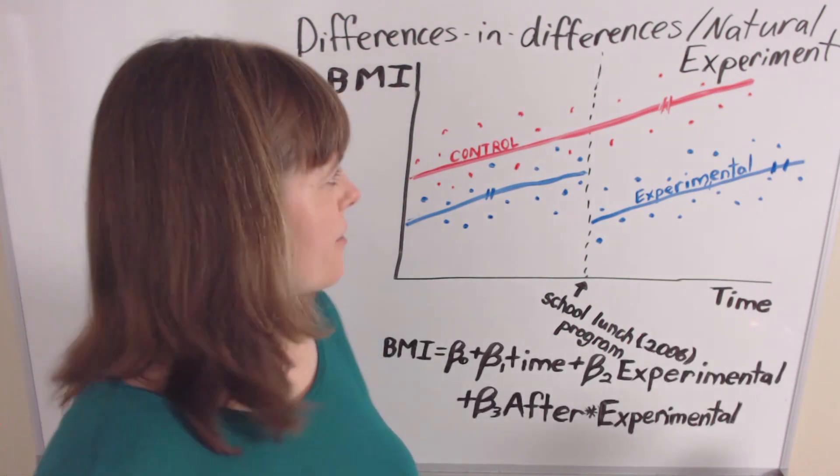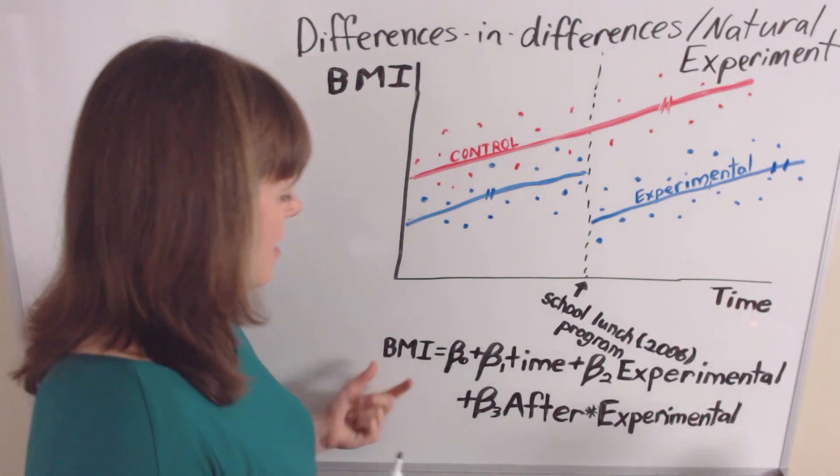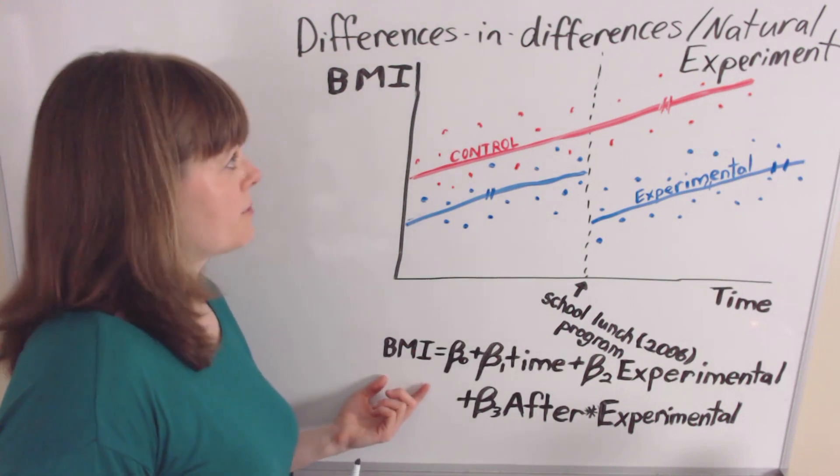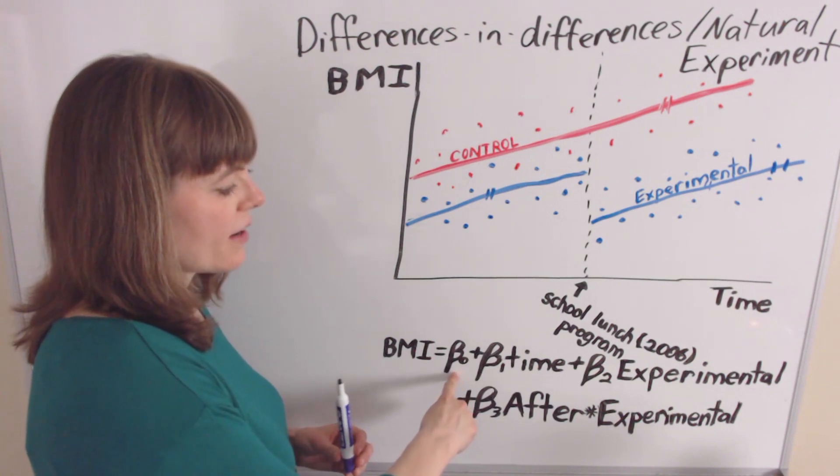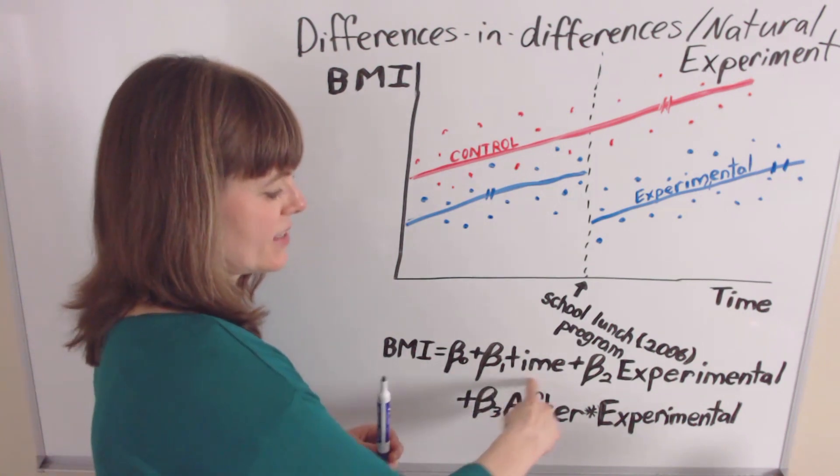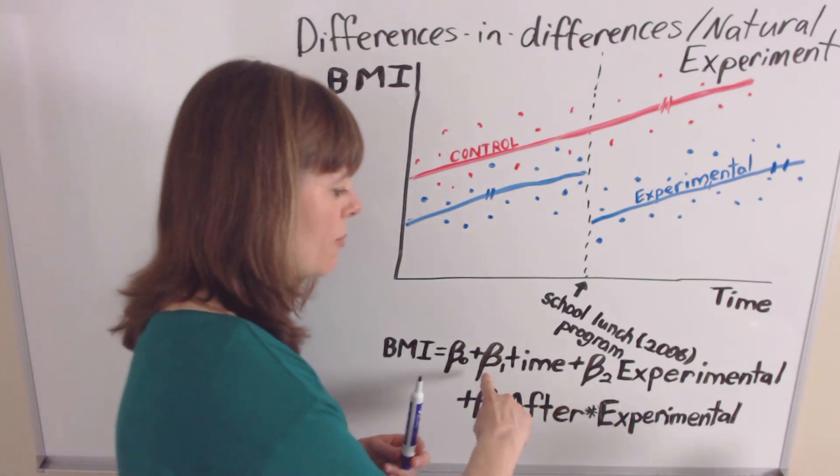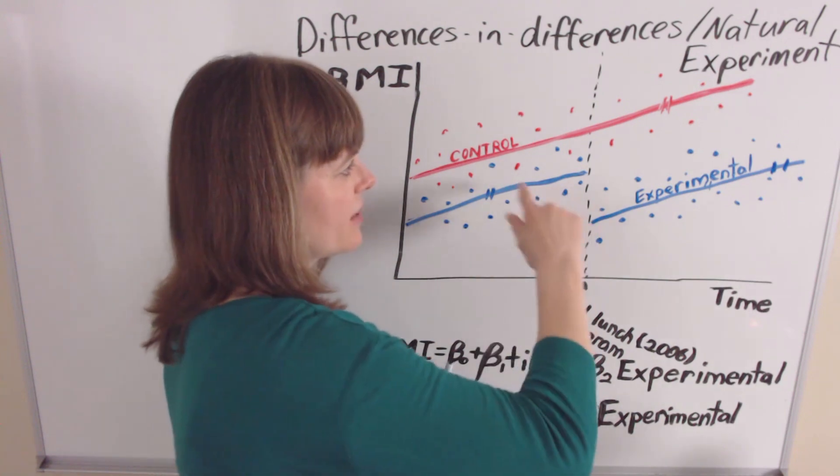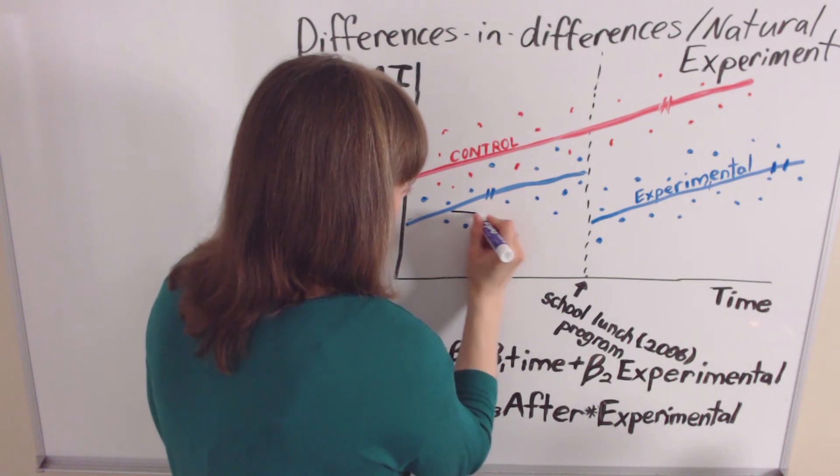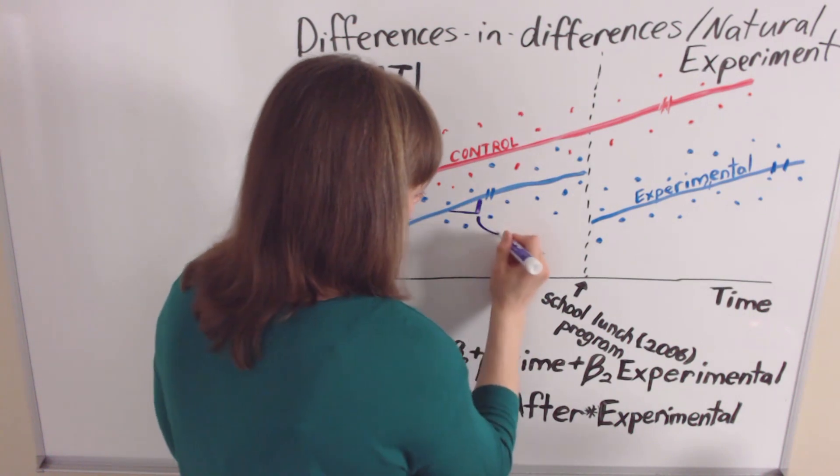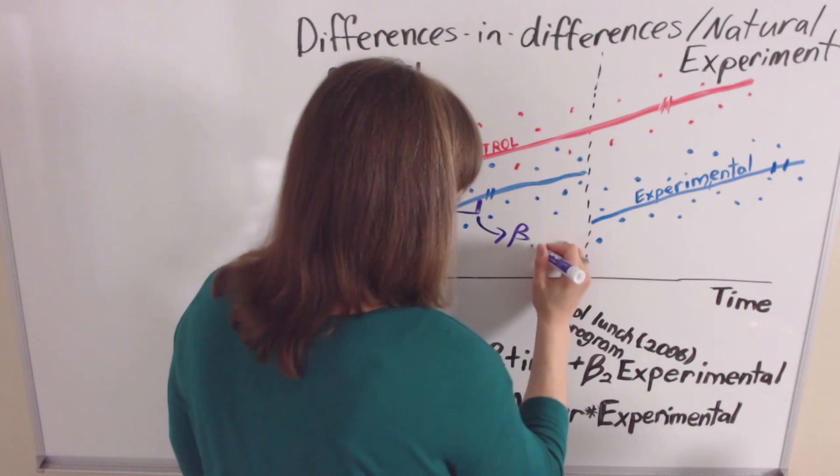The econometrics for differences in differences are going to look like this. We're going to have our response variable as BMI, and that's of course on the y-axis here. And then we've got an intercept beta naught. We've got beta 1 times time, so this is going to represent the time trend. Since we have the same time trend for all these graphs, that's going to represent this particular slope. That's going to be beta 1.